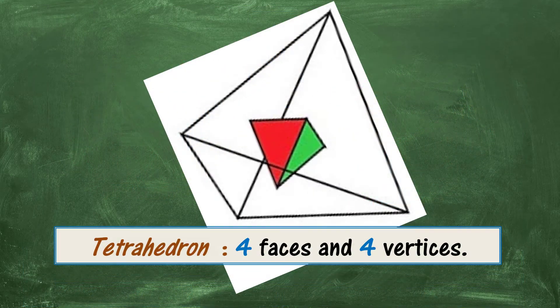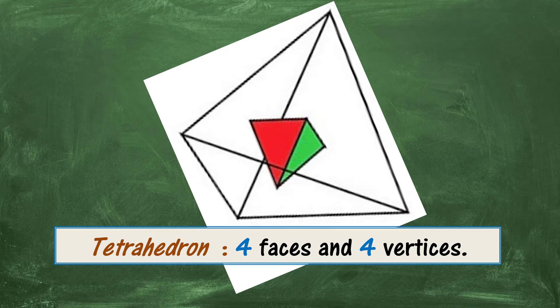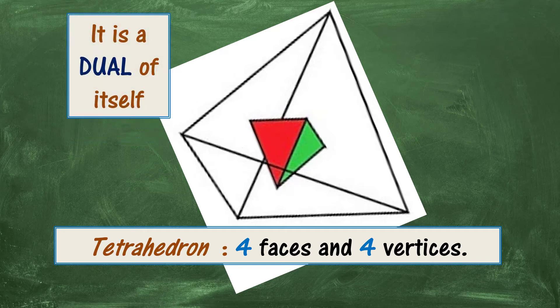Lastly, the tetrahedron has four faces and four vertices. And if we join the centre of each of those faces, it's a dual of itself.